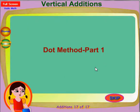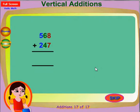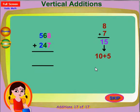Let me explain this using an example. Let's add 568 plus 247. First add 8 and 7. It's 15.